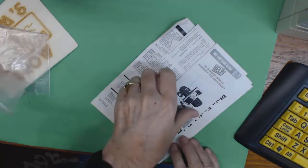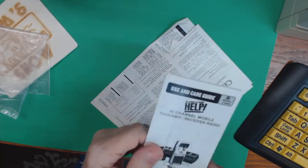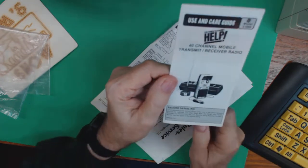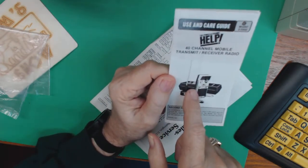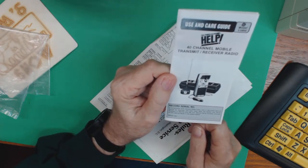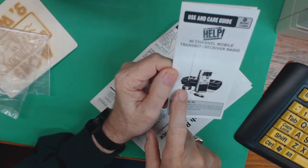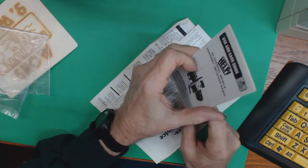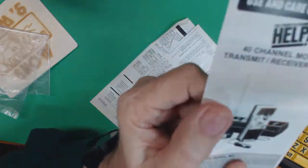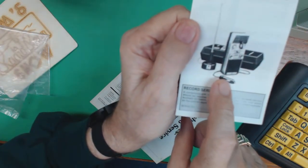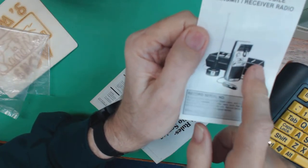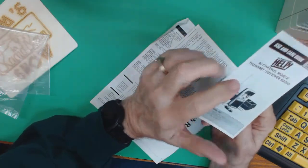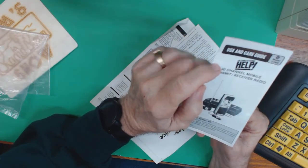Okay, so there is the user and care guide. There's the little unit there, it's a little handheld unit. It looks kind of like a walkie-talkie. There's the magnetic mount antenna, and it plugged into your cigarette lighter. It came in this nice little box, and it was a 40-channel CB radio.